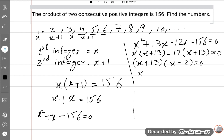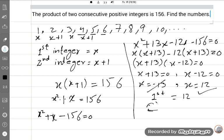(x plus 13)(x minus 12) equals 0. So x plus 13 equals 0, or x minus 12 equals 0. x equals minus 13, which is impossible, or x equals 12. So the first integer is 12. The second is x plus 1, which is 12 plus 1, equals 13. This is the required answer.